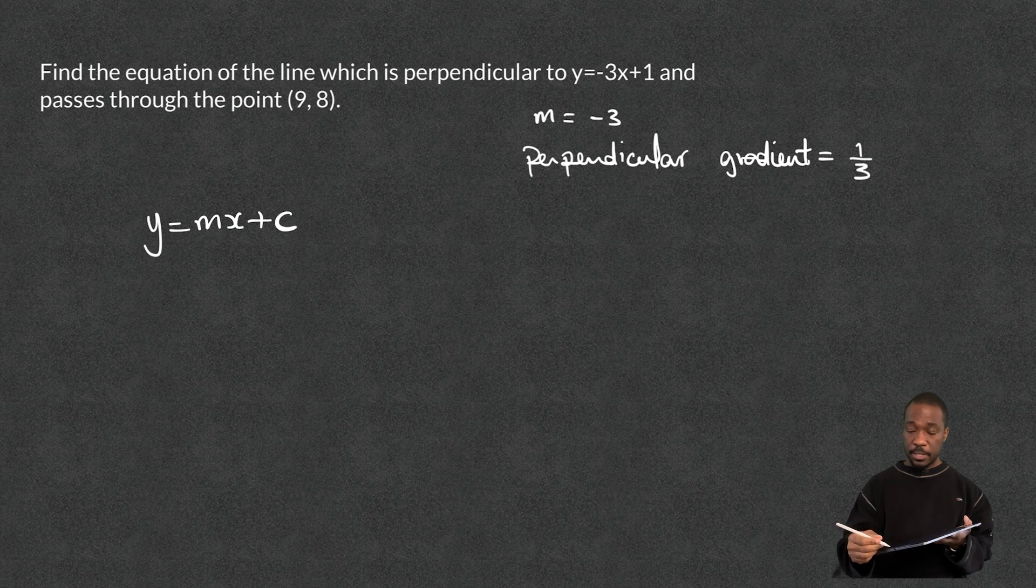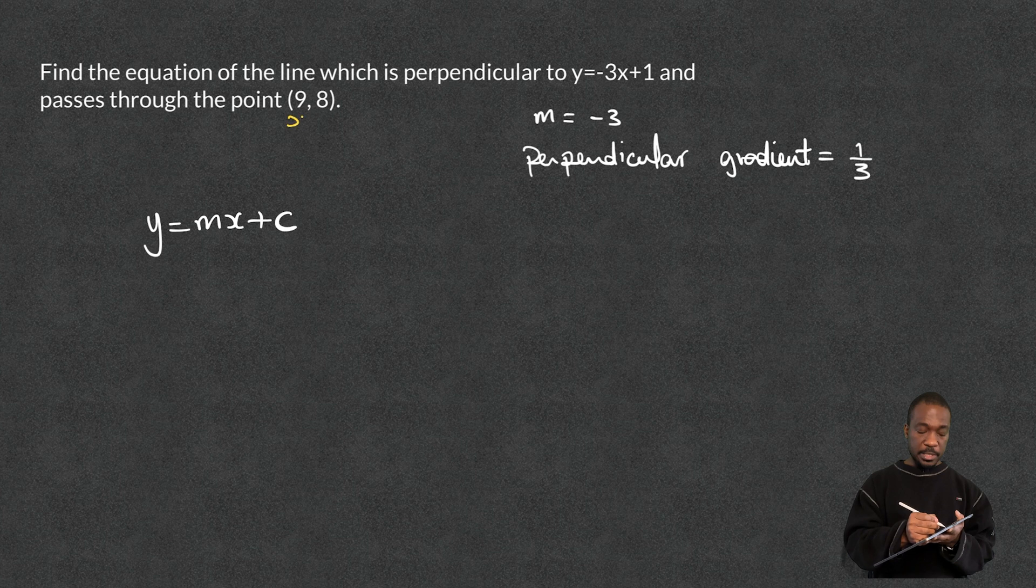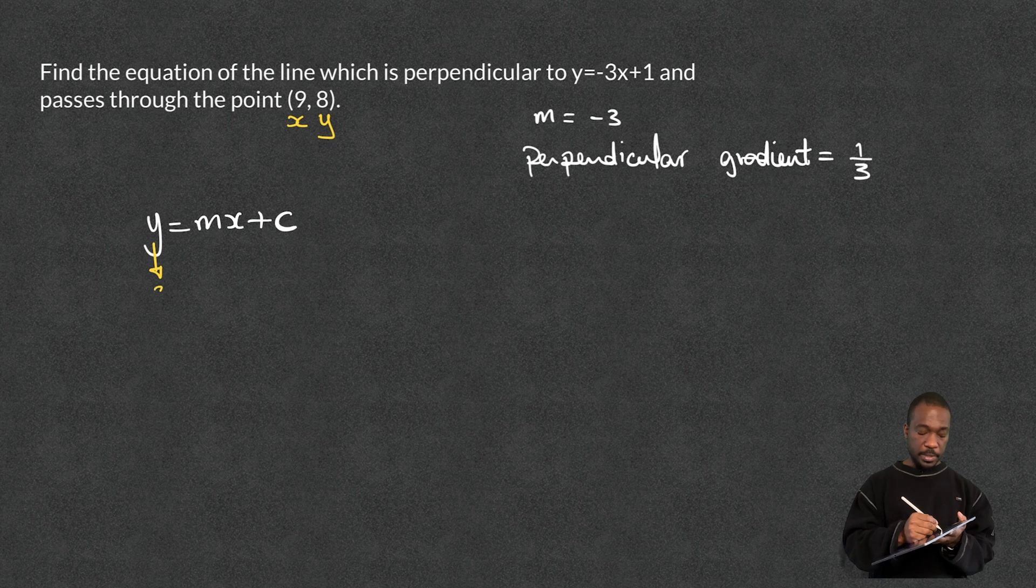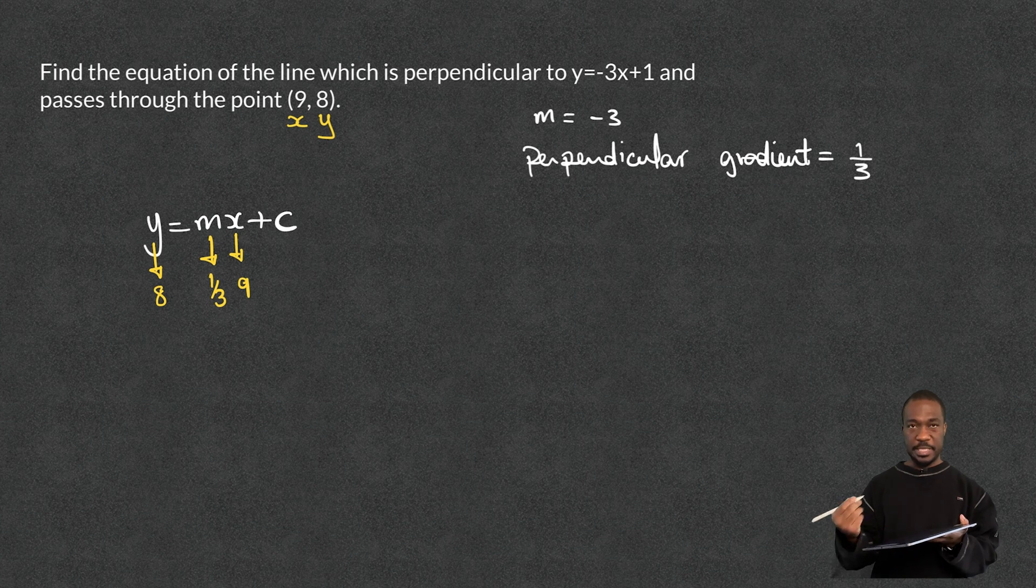So what do I already know? Well, I know my gradient is a third, and I know it goes through this pair of coordinates here. And from those pair of coordinates, this is an x value, and that's a y value. So what I'm going to do, I'm going to replace my y with 8, I'll replace my m with a third, and I'll replace my x with 9, like that. And then that's going to help me to find my c.